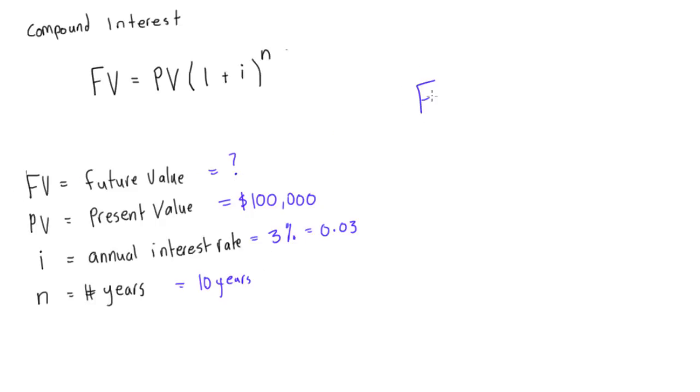Well, we say that we have FV is going to be equal to present value is 100,000. How many zeros do I have here? 100,000 times 1 plus 0.03 to the power of n, which is 10 years, to the power of 10. So we say that we can have 100,000 times 1.03 to the power of 10.